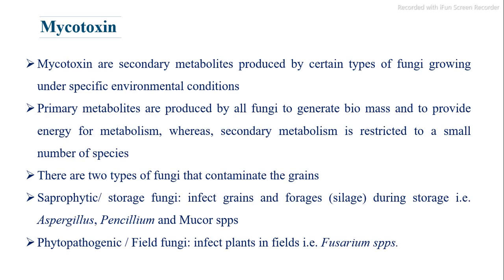Mycotoxins are secondary metabolites produced by certain types of fungi growing under specific environmental conditions. Primary metabolites are produced by all fungi to generate biomass and provide energy for metabolism, whereas secondary metabolism is restricted to a small number of species. There are two types of fungi that contaminate grains.